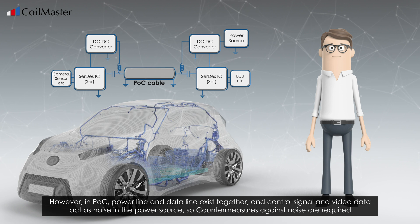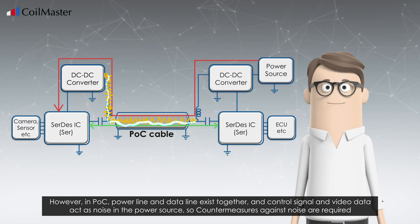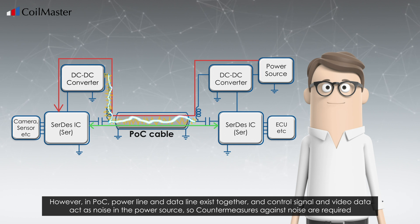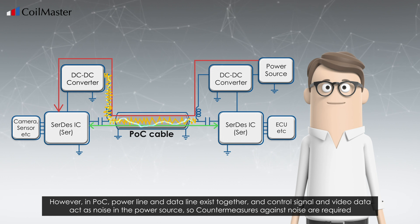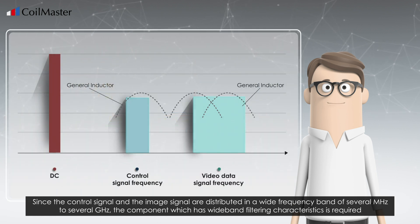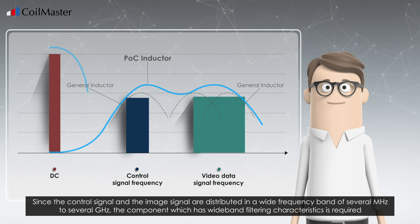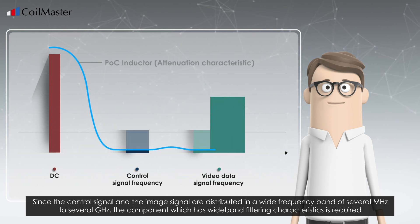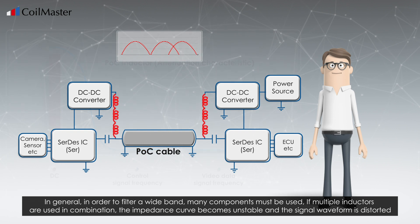However, in POC, the power line and data line exist together, and control signals and video data act as noise in the power source, so countermeasures against noise are required. Since the control signal and the image signal are distributed in a wide frequency band of several megahertz to several gigahertz, a component which has wideband filtering characteristics is required.